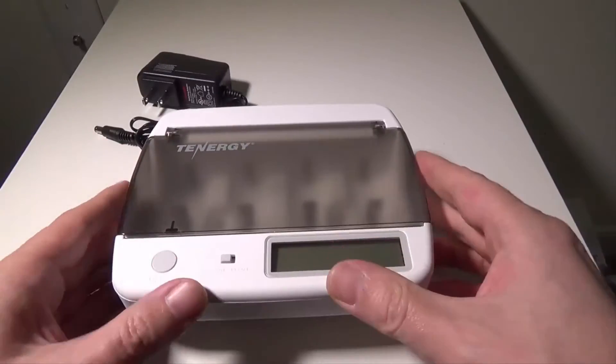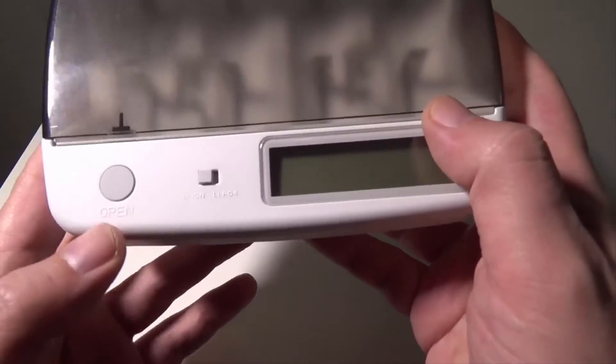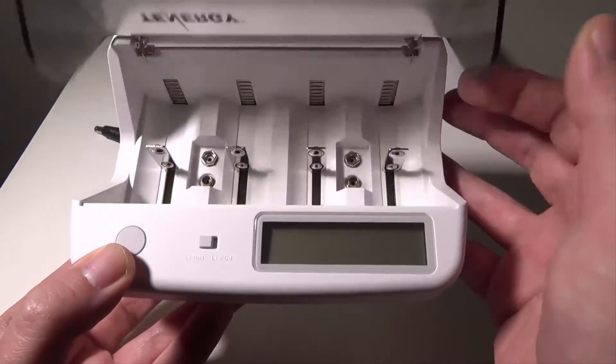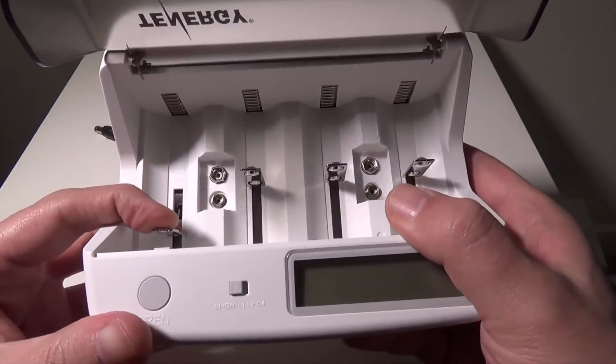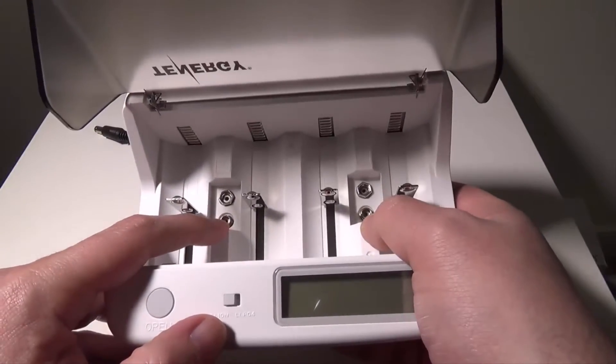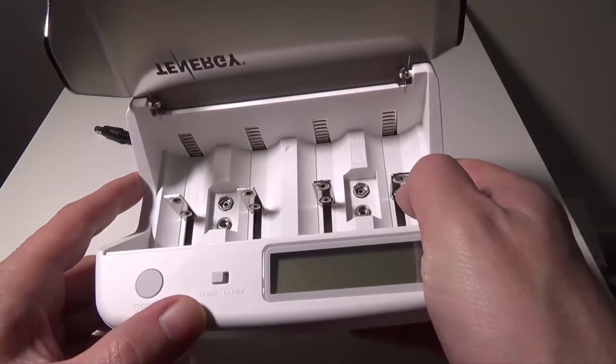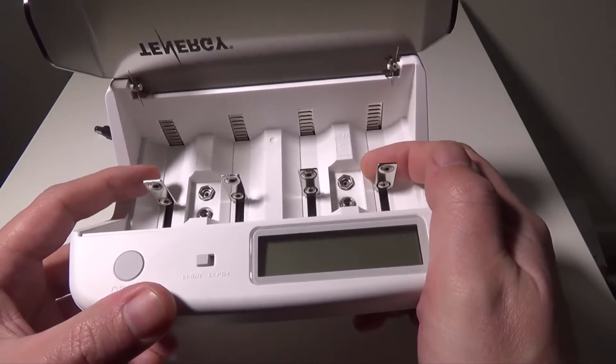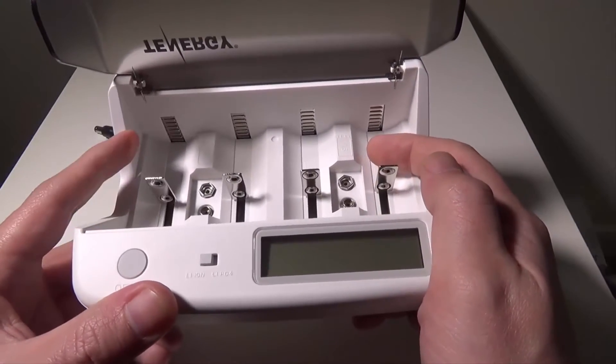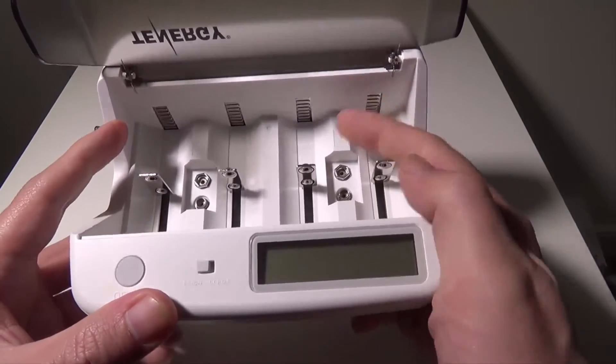On the front you're going to have an open button here - this will open up the front latch. And then you're going to have spring-loaded spots here and two slots for 9-volts. You're going to have four slots across here that will accommodate your triple-As, your double-As, your Cs, your Ds, your lipo batteries - all of that will go into here.